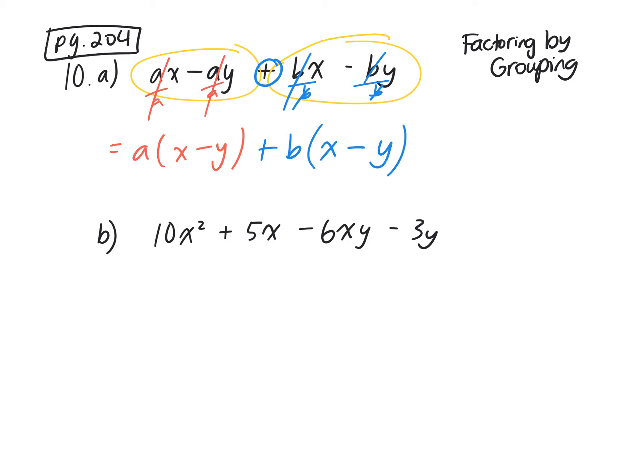So now, yes, what would it be now? A plus B. It doesn't matter what order. X minus Y because this is a common factor and then what's left? A plus B. So that's factored fully.